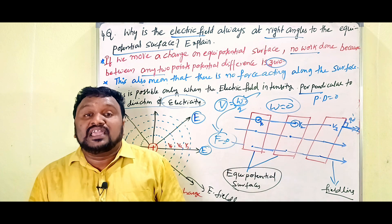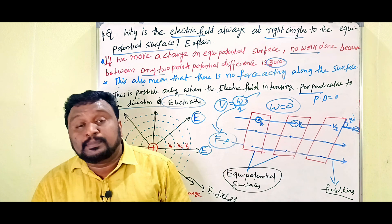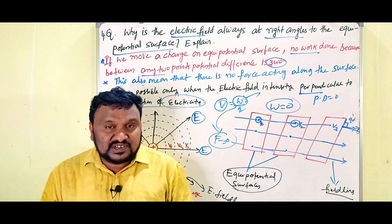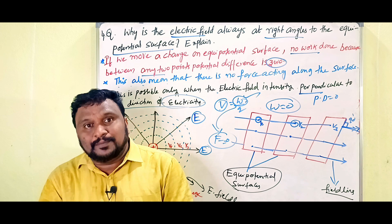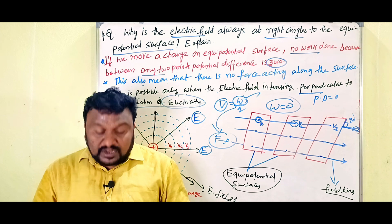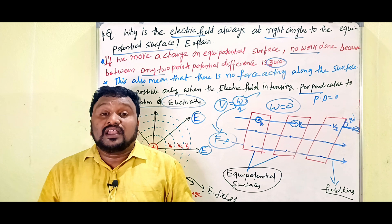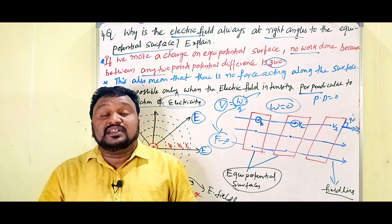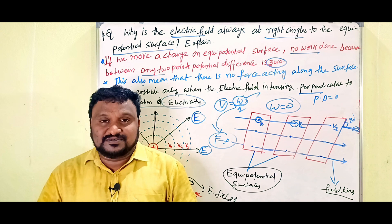So this is the right angle, and this is the answer. The electric field is always perpendicular to the equipotential surface. If you understood this, please like, share, and comment on the video. Thank you for watching.